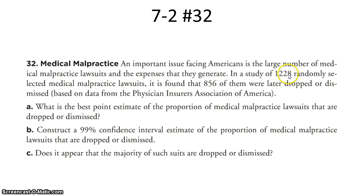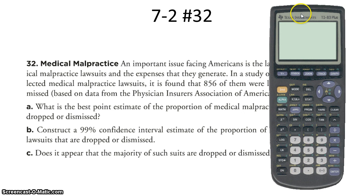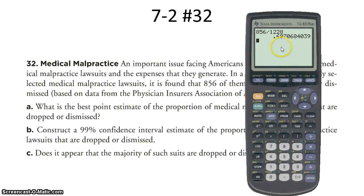We randomly selected 1,228 medical malpractice lawsuits — that's the size of our sample — and out of that 1,228, 856 of them were later dropped or dismissed. We can calculate the proportion by dividing the two numbers. Taking 856 divided by 1,228, we get approximately 0.6971. About 69.71% of the medical malpractice lawsuits were dropped or dismissed, and we use that sample proportion as the best point estimate for the population proportion.